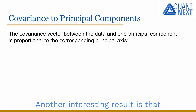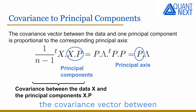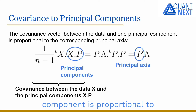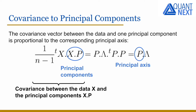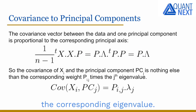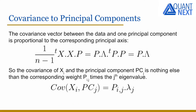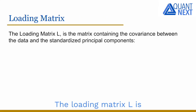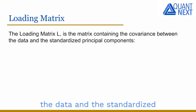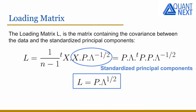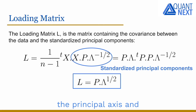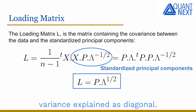Another interesting result is that the covariance vector between the data and one of the principal components is proportional to the corresponding principal component axis, with the proportionality factor being the corresponding eigenvalue. The loading matrix L is the matrix containing the covariance between the data and the standardized principal components. It is equal to the product of the matrix P containing the principal axes and the square root of the matrix lambda with the corresponding variance explained as diagonal.